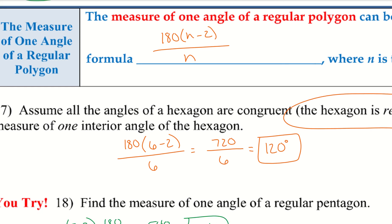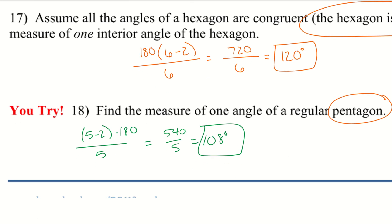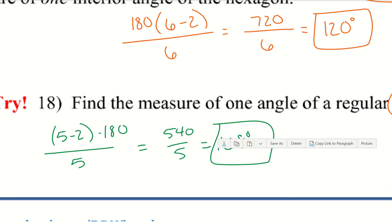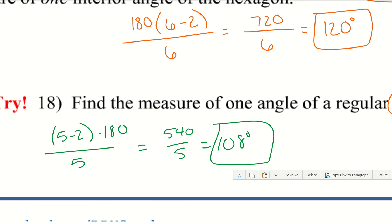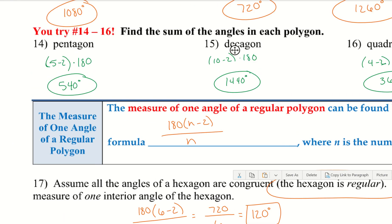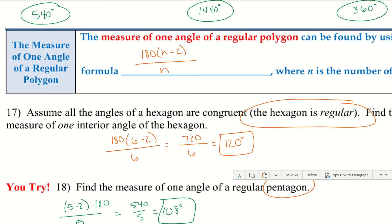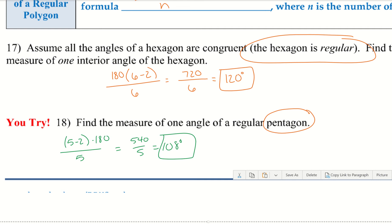Go ahead and try number 18 — find the measure of one angle of a regular pentagon. A pentagon has 5 sides. We get 540 divided by 5, which gives 108 degrees. For these problems, it's nice because you're finding what all the angles add up to first, and then finding that one particular angle. Sometimes you have to find both things; sometimes you don't.